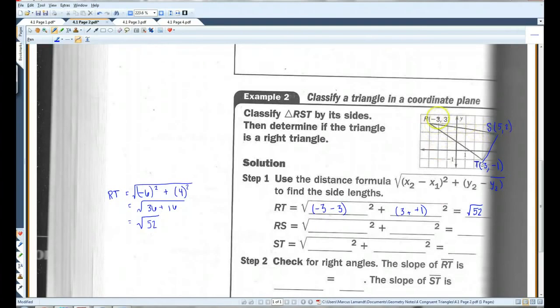Okay. RS, that's this side here. We've got negative 3 minus 5, 3 minus 2, both of these squared. I'll do this over here. Negative 3 minus 5 is negative 8, so I've got negative 8 squared. 3 minus 2 is 1, so I've got 1 squared. This is 64 plus 1, square root of 65.